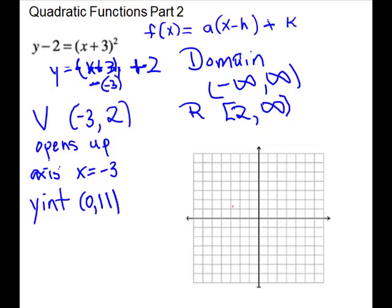To graph, first plot the vertex at (−3, 2). It opens up, so it goes this way. This will be your axis of symmetry at x = −3. For our extra point we have (0, 11), so the y-intercept is up at 11 on the y-axis. It will flip across the axis of symmetry, so our picture looks like that. Verifying: domain goes forever left and right, negative infinity to positive infinity. The range — the y-coordinate of the vertex is the lowest point — is [2, ∞).